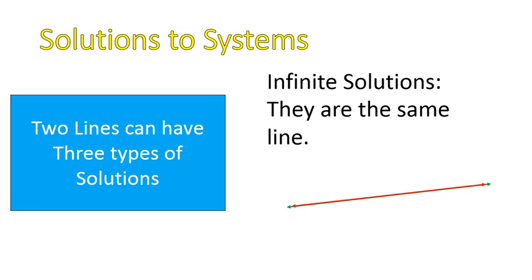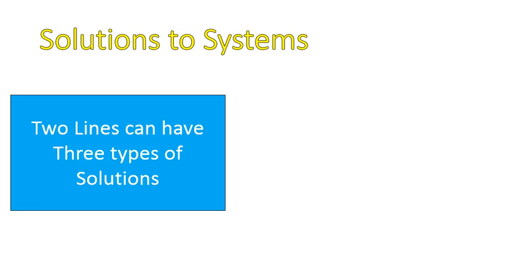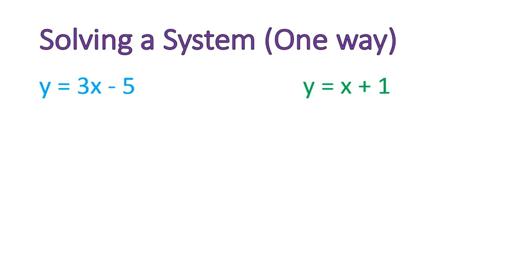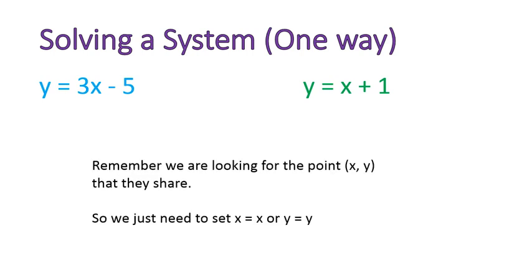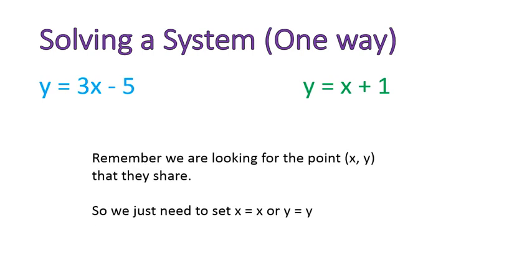Now what we're going to do is we're going to solve systems algebraically, just knowing that we are doing the same thing, only we're using math and numbers and equations. This is one way to solve a system of equations. There are several different ways. I'm going to show you one way that's nice and pretty straightforward. Remember, we are looking for one point, the point x, y, that both of these equations share. So all we need to do is set x equal to x or y equal to y on these equations.